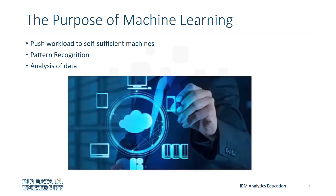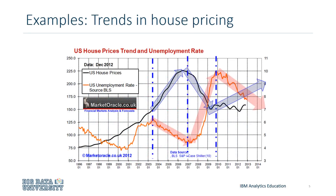There are actually a wide range of technologies that integrate machine learning, many of which you may use in your daily life. A subset or algorithm of machine learning, known as regression, can be used to interpret labeled data to predict trends in things such as house pricing, which may produce faster, more accurate predictions than modern statistical modeling.